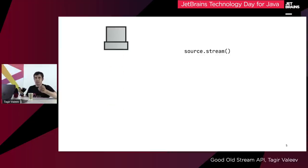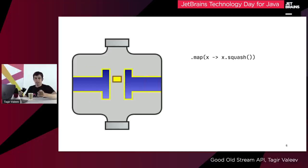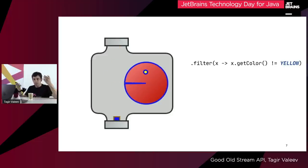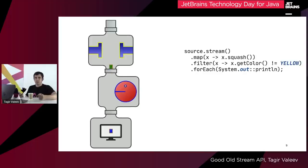Stream operations are connected in a similar way. For example, let's take a source that produces a stream of colored bars. Then we can take a transformation component named map, which in this case will squash our bars into blocks. Now we can add a filtration component — for example, a filter that removes all yellow blocks from the stream. Then finally we can attach a sink or a terminal operation, such as printing the elements on the screen. We then just connect everything together and it just works.